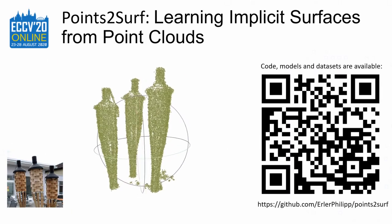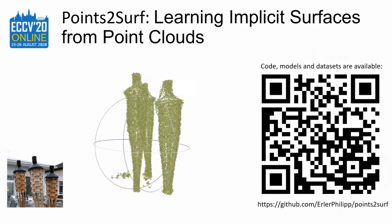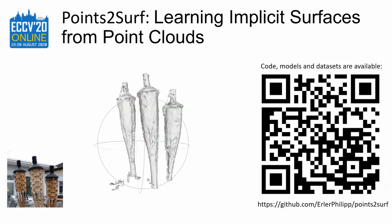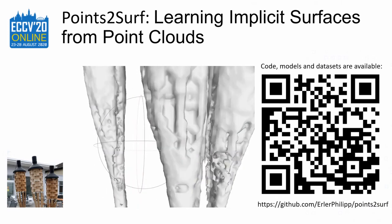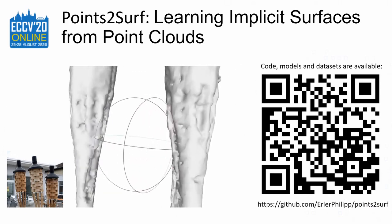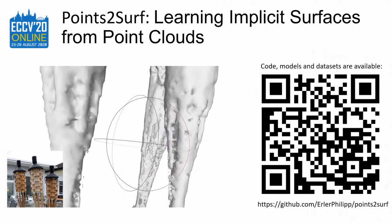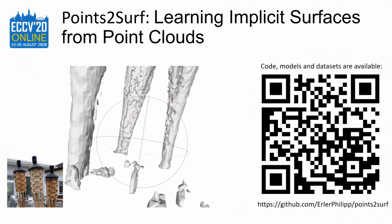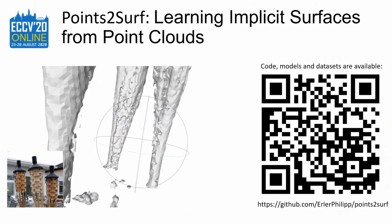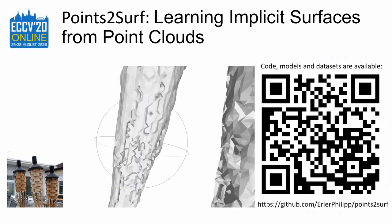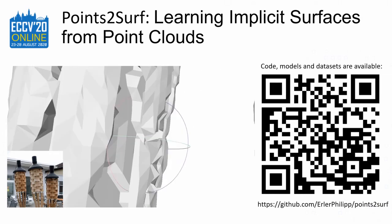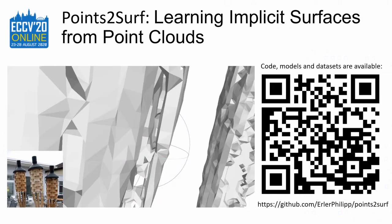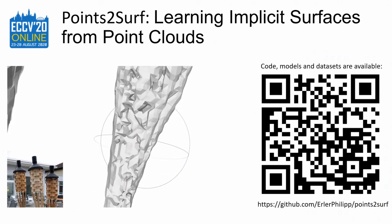To summarize, Points to Serve uses a strong local prior that combines robustness and accuracy with good generalization. This makes it a good solution for all kinds of point clouds, independent of object classes and acquisition methods. It is especially strong in cavities and at fine details, and on top it doesn't require point normals. The source code, models, and datasets are available on GitHub. We hope to see you at the Q&A sessions.